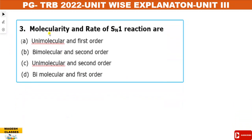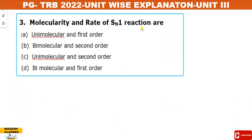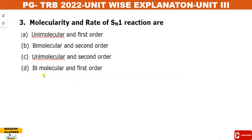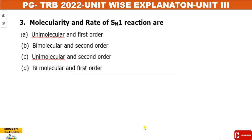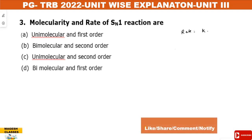Next question: the molecularity and rate order of SN1 reaction. Options: (A) unimolecular and first order, (B) bimolecular and second order, (C) unimolecular and second order, (D) bimolecular and first order. Basic concept: the rate order is the total number of concentration terms present in the rate equation. Rate = rate constant × concentration of the substance involved.